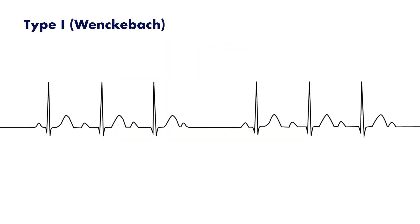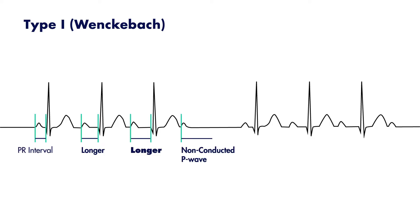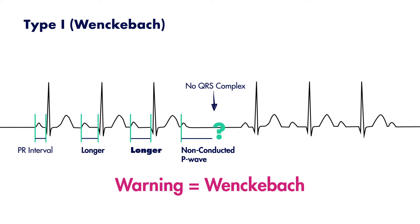On a cardiac strip, you'll see a progressive lengthening of the PR interval until a normally occurring P wave is not followed by a QRS complex. You could think of this progressive lengthening PR interval as a warning, or a hint that this may be a type 1 second degree AV block.